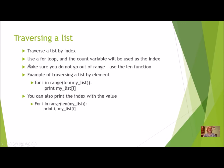To traverse a list by index, use a for loop with a count variable — for count, for x, or for i — where that variable is the index. Make sure you do not go out of range. The easiest way is to use the len function, which always tells you how many elements there are. If you have 10 elements, len returns 10, and you'd go from 0 to 9. Use len in your range so it always goes up to but does not include that number.